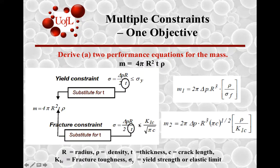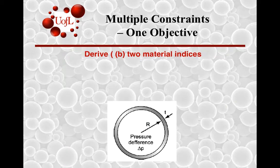In the second situation, based on the fracture constraint, where you solve for T by combining the fracture constraint with the objective for minimizing mass, you will have M2 which is again a product of the functional index, a geometric index that combines now the radius as well as the crack length, and then a material index of rho over K_IC. Fracture toughness and density are both material properties. K_IC over rho is a specific fracture toughness; sigma f over rho is the specific yield strength.